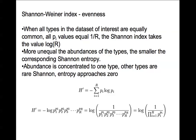The Shannon-Wiener index also measures evenness, and its values are similarly based on the probability of drawing the same species. More unequal abundances result in smaller Shannon entropy values, and when abundance is concentrated to one type, the entropy approaches zero.